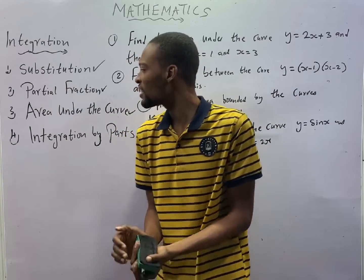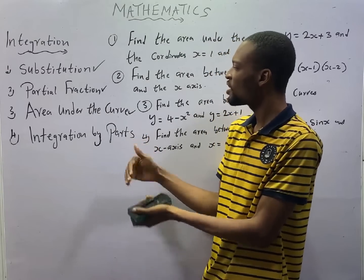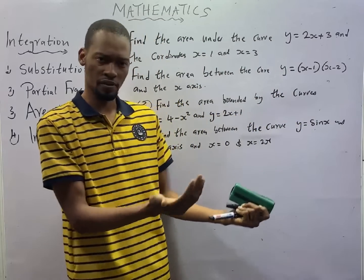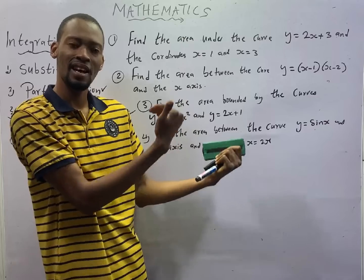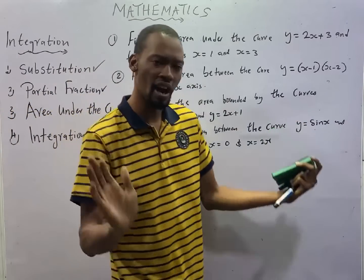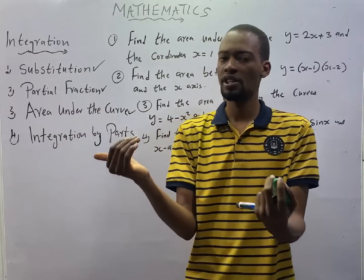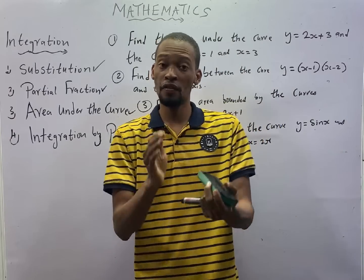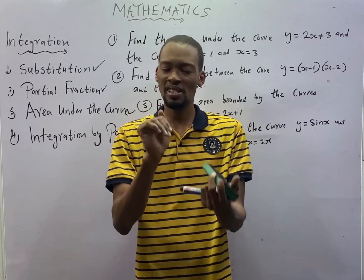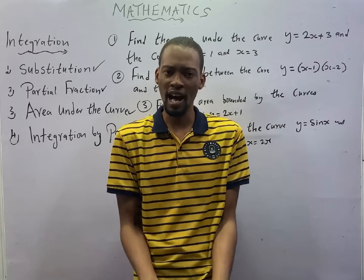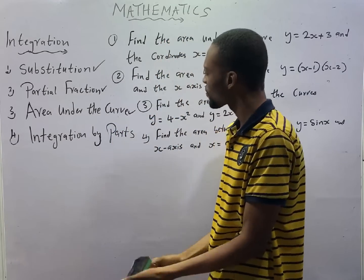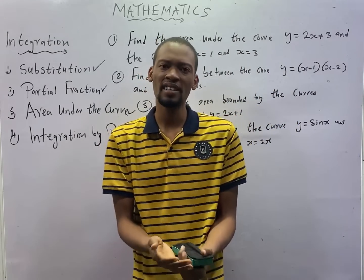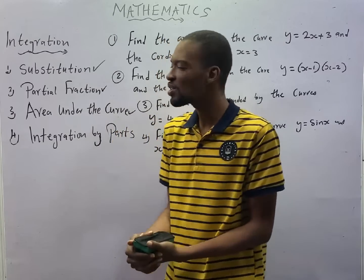Number one is area under curves. In physics, mathematics, in chemistry, you'll be given a lot of curves cutting across the x-axis and the y-axis. Now, what is this area bounded by this curve? Integration can help you find that. Now, you can also find the volume of solids using integration. Apart from that, you can find velocity from acceleration. You can find distance from velocity using integration.